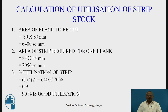The area of strip required for one blank: the width of the strip is 84 mm, so 84 × 84 gives the area of strip required for one blank, which comes out to be 7056 mm². Percentage utilization of the strip is calculated as area of the blank divided by area of strip required for one blank, multiplied by 100 — that is 6400 ÷ 7056, which equals 0.9, or 90%. This is very good utilization; very little scrap loss, so our strip layout is very good.